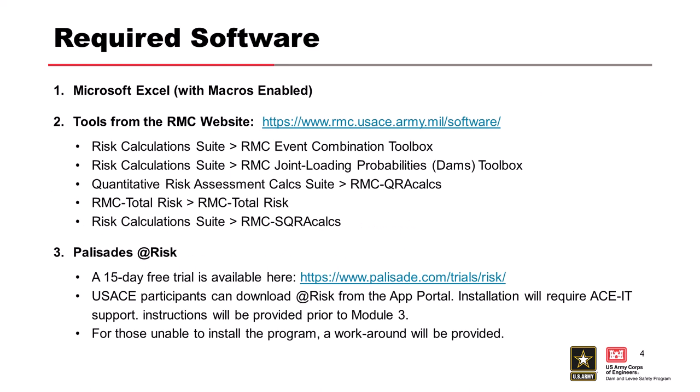For this course, you're going to need to have a couple of programs and to download some spreadsheet tools. First, everyone is going to need to have Microsoft Excel and the ability to enable macros. Second, there are several tools that you'll need to download from the RMC's website: the Event Combination Toolbox, the Joint Loading Probabilities Toolbox, and the RMC SQRA Calcs — those can all be found on the software page under the Risk Calculation Suite.